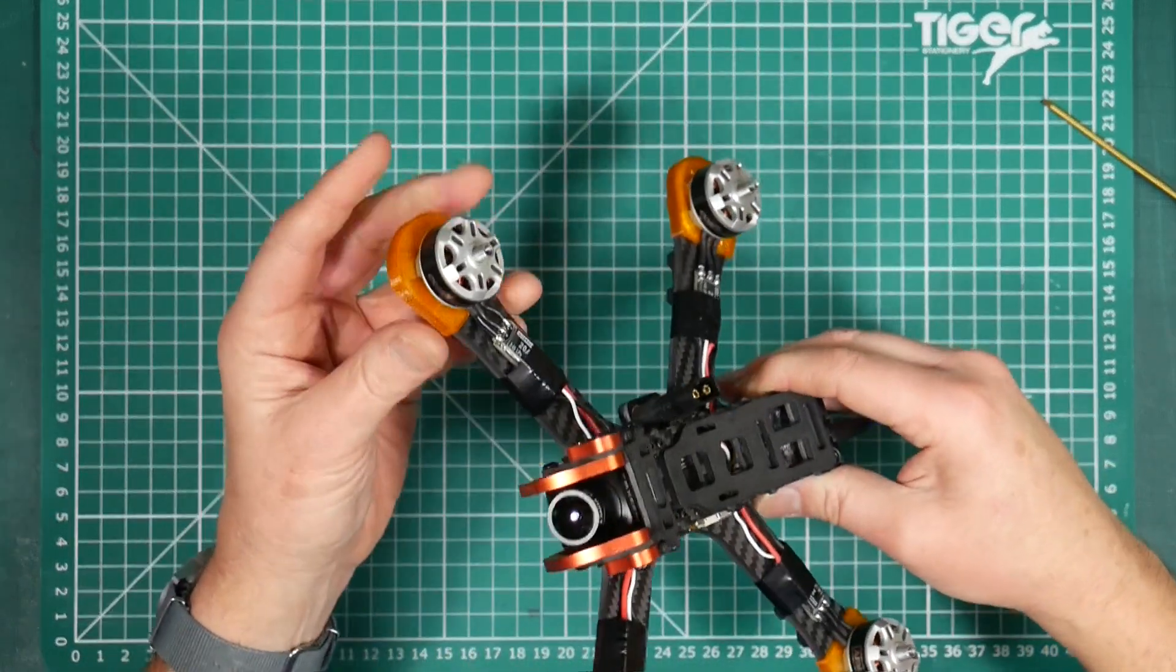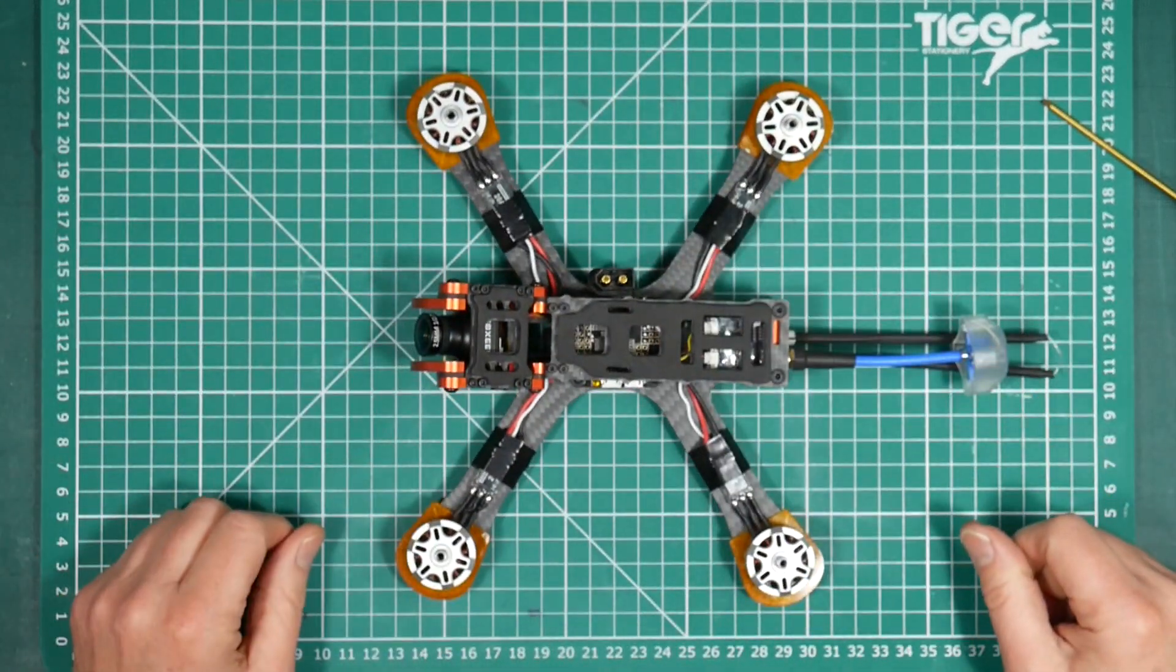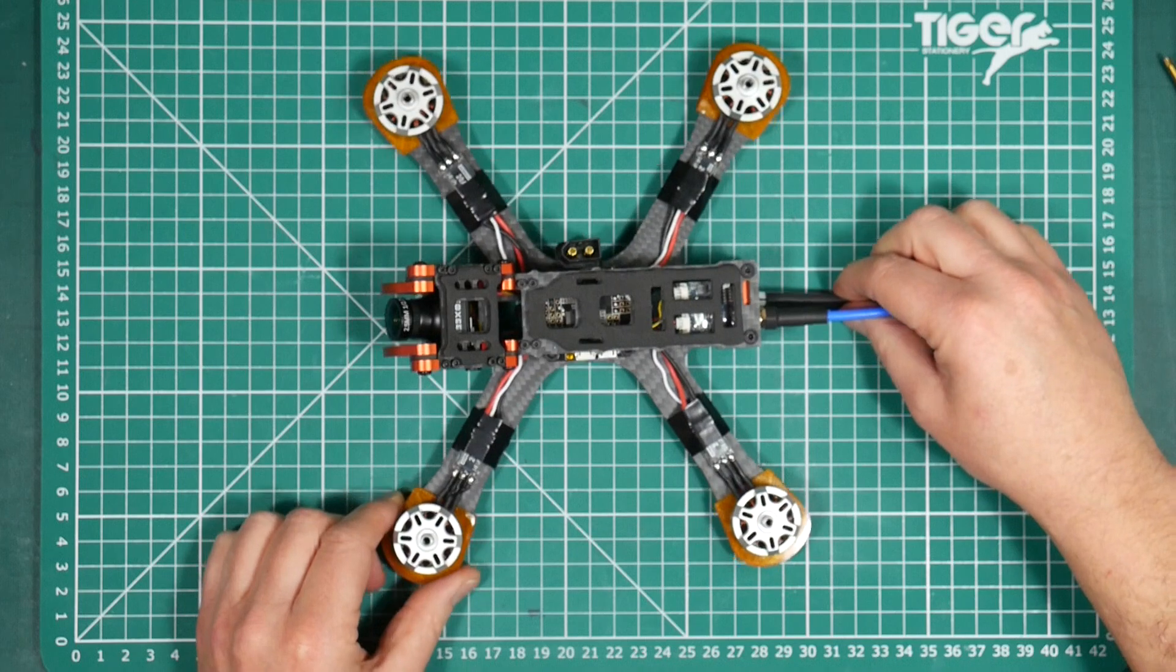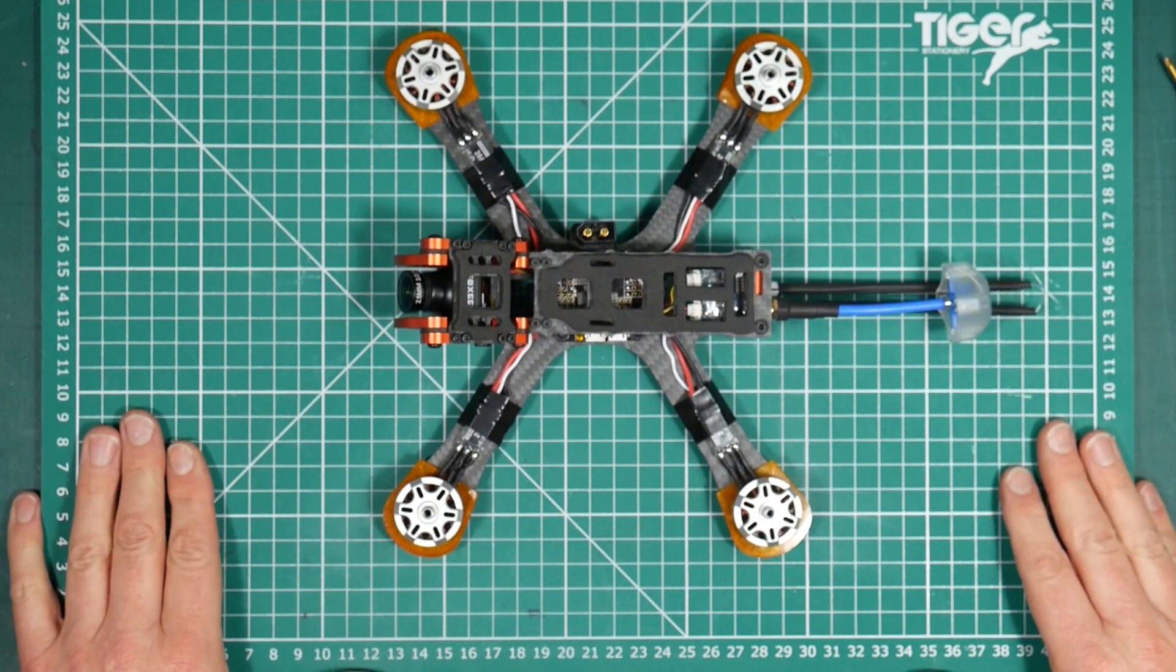I think these look pretty good in orange, and they do match quite nicely the orange anodized hardware of the Chameleon. They keep the frame looking nice and neat and tidy. There we go, ready to go out for a flight.